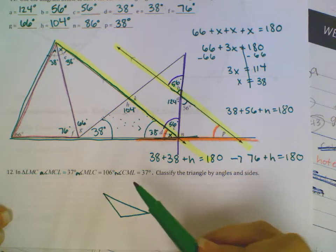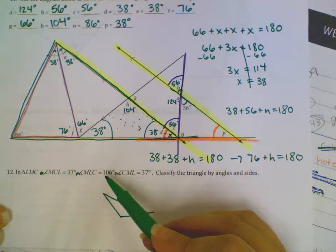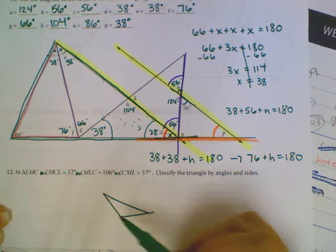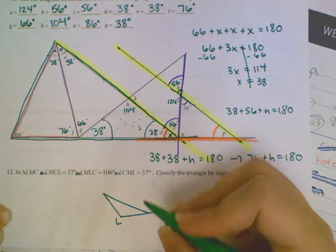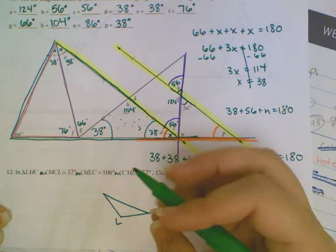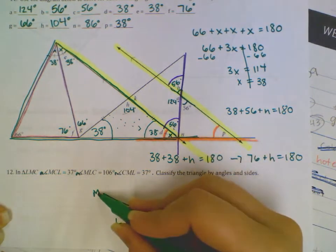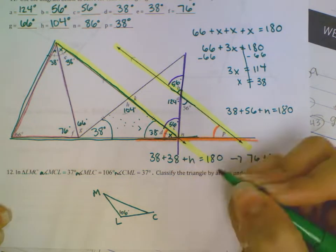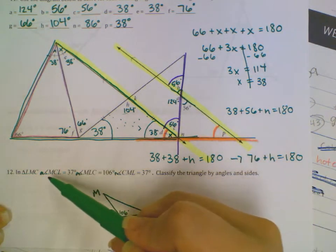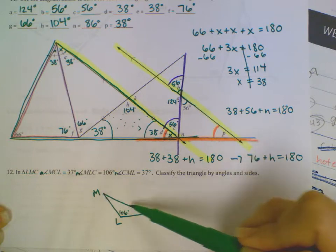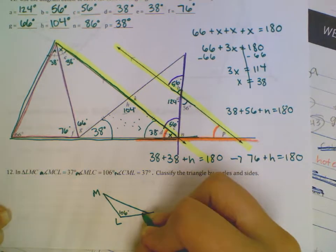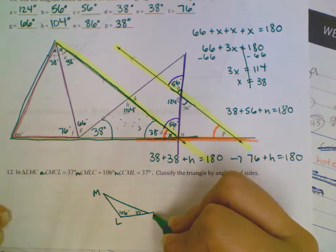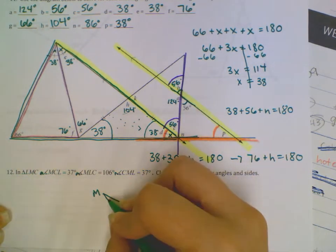An angle MLC, L needs to be right here, and then my M and C doesn't really matter. I can put my M here, my C here, so I've got MLC is 106 degrees. I've got MCL, MCL, which is this angle right here, is 37 degrees, and CML, CML, so this will be 37 degrees.